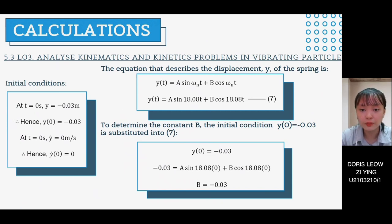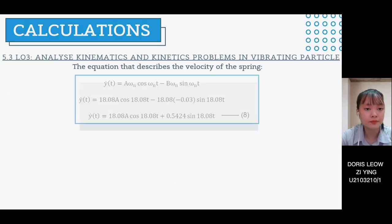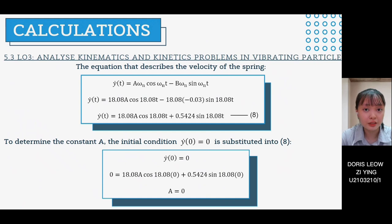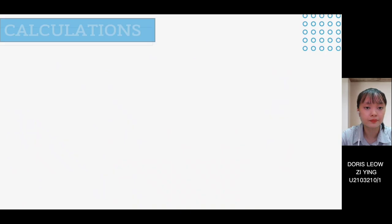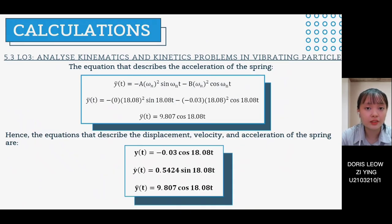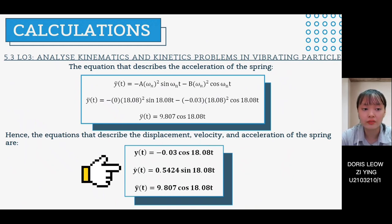Differentiating the displacement equation gives the velocity equation. Substituting B and the natural frequency yields equation 8. Substituting another initial condition into equation 8 gives constant A, which equals zero. Differentiating the velocity equation gives the acceleration equation. Substituting all known values produces the complete equations describing the displacement, velocity, and acceleration of the spring.